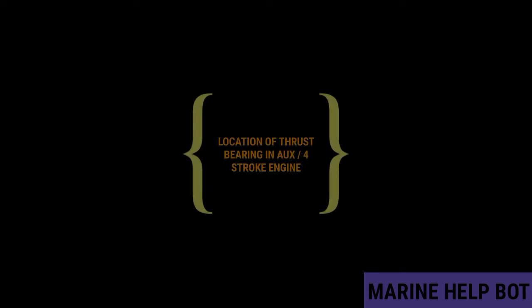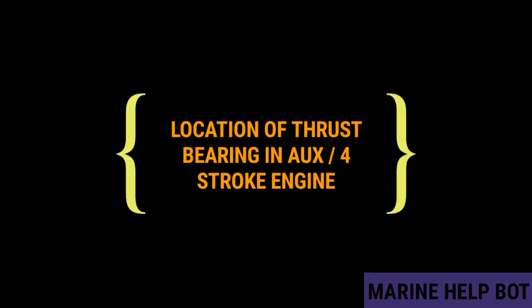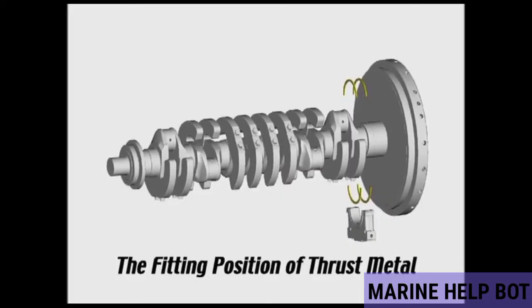The location of the thrust bearing in an auxiliary or four-stroke engine: the thrust metal is located at the last journal bearing, near the flywheel side.